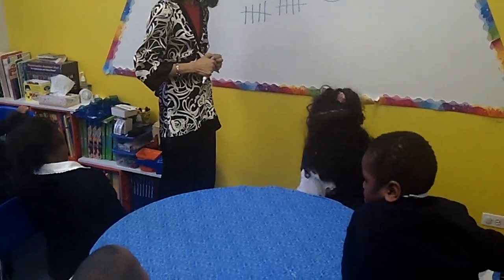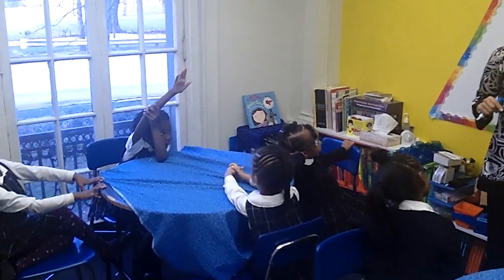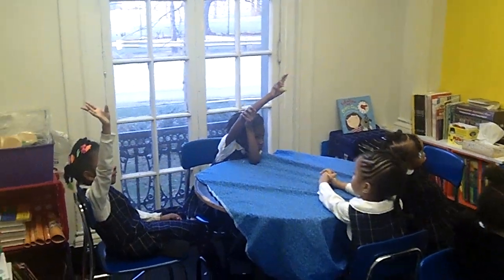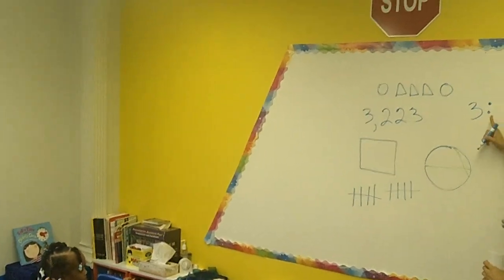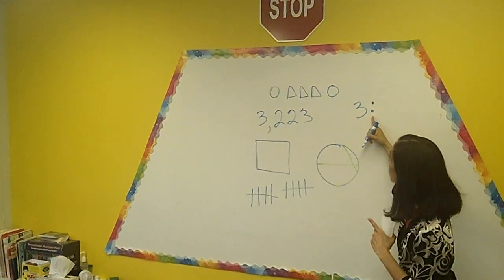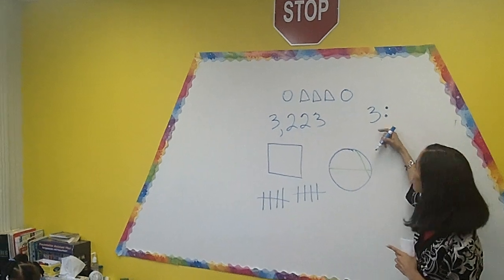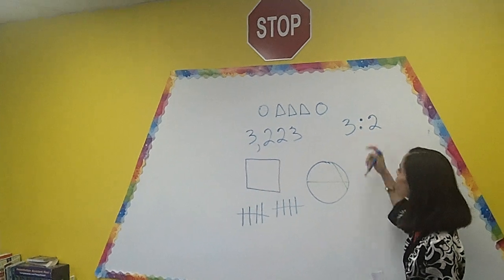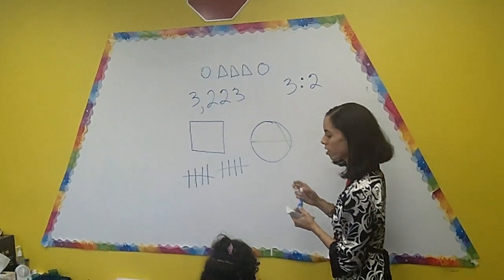How many triangles do I have? Three. And what do I call these little dots? Colon — very good. So it's three colon two. How many circles do I have? Two. The ratio of triangles to circles is three to two. And what do we call this symbol again? Colon — very good. You guys are so smart.